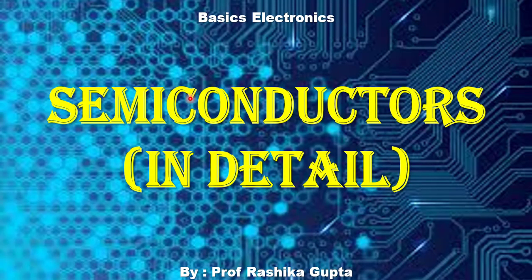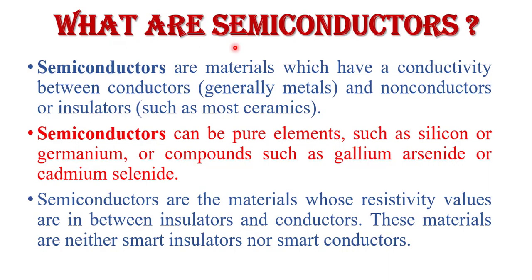Hello friends, welcome to Quick Learn Tutorial Series. In this video I will explain semiconductors. Semiconductors are those materials whose conductivity lies between conductor and insulator. Semiconductor materials are neither a pure insulator nor a pure conductor — their conductivity lies between conductor and insulator.